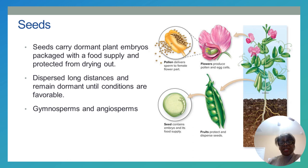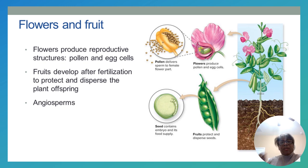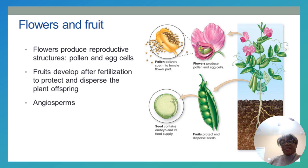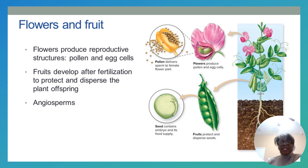Flowers produce reproductive structures — pollen and egg cells. Fruits develop after fertilization to protect and disperse plant offspring, as seen in angiosperms. The seed is where we find the plant embryo, stored with its own food supply so it can survive until planted, then begins to germinate — G-E-R-M-I-N-A-T-E — meaning growth and development.